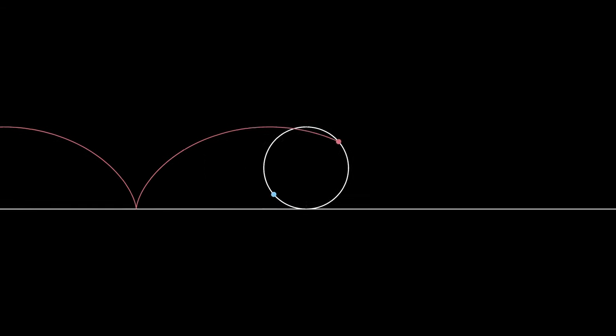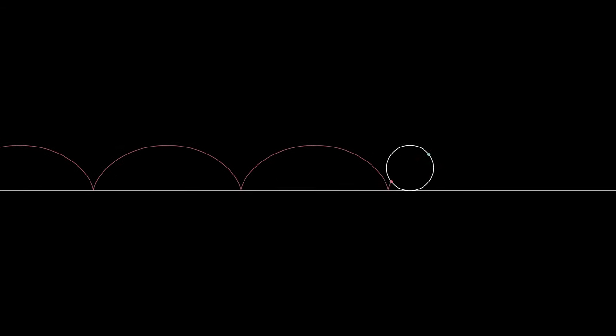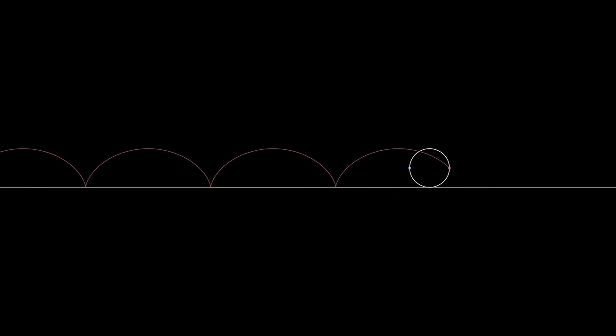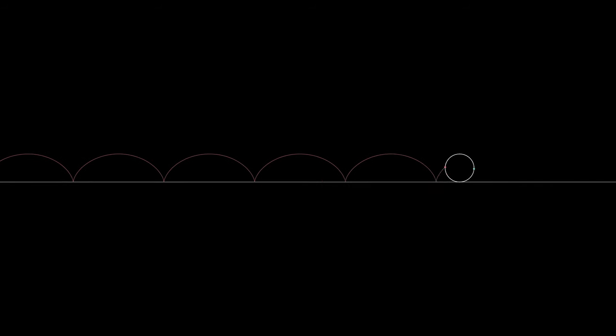If we trace out the path traversed by the red dot, we get this curve here. This curve is known as the cycloid, and it will continue forever as long as we let the circle roll.